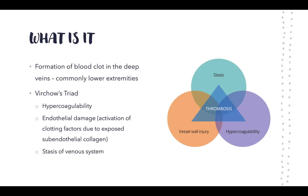Why is the blood clot there in the first place? One reason is the blood could be more coagulable — there may be conditions that predispose the patient to clot more easily. Another reason is endothelial damage, which exposes the vessel wall to collagen, activating clotting factors. Another reason is stasis of the venous system — when blood is not flowing properly due to poor functioning veins or immobilization, it pools and clots more easily.